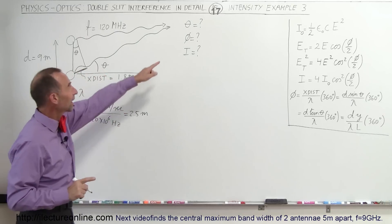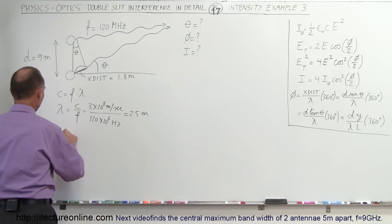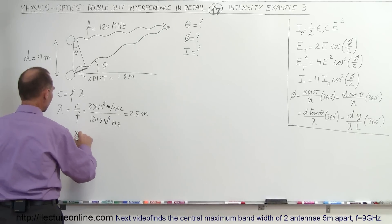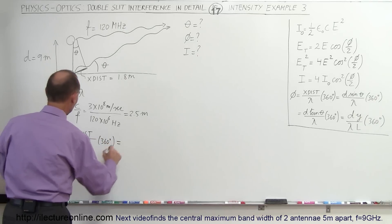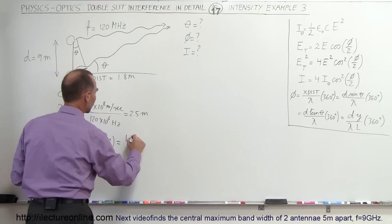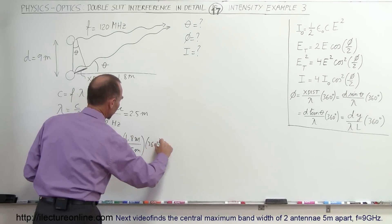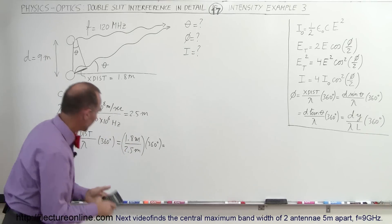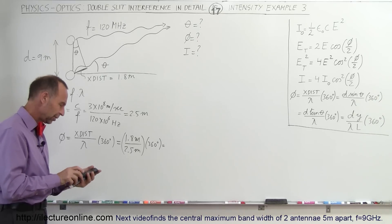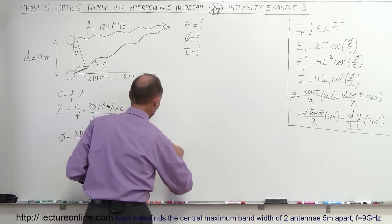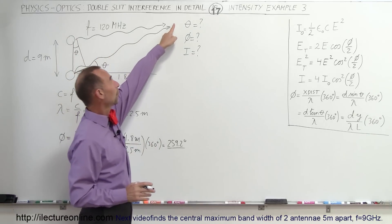The wavelength is 2.5 meters, which means we can calculate the phase angle using: phi equals the extra distance divided by the wavelength times 360 degrees. The extra distance traveled was given as 1.8 meters and the wavelength is 2.5 meters, so 1.8 divided by 2.5 times 360 degrees equals 259.2 degrees. That is the phase angle difference between the two waves when they arrive at that point.